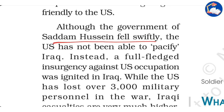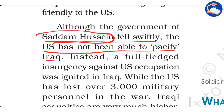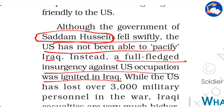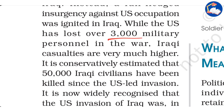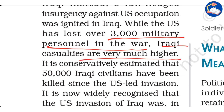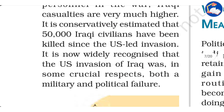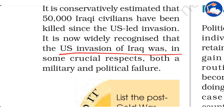Although Saddam Hussein's government fell swiftly, the US was not able to pacify Iraq. Saddam Hussein had, to some extent, maintained law and order despite being a dictator, but that was dismantled when the US invaded. Instead, a full-fledged insurgency against US occupation was ignited. While the US has lost over 3,000 military personnel, Iraqi casualties are much higher — it is conservatively estimated that 50,000 Iraqi civilians have been killed since the invasion. It is now widely recognized that the US invasion of Iraq was in crucial respects both a military and political failure.